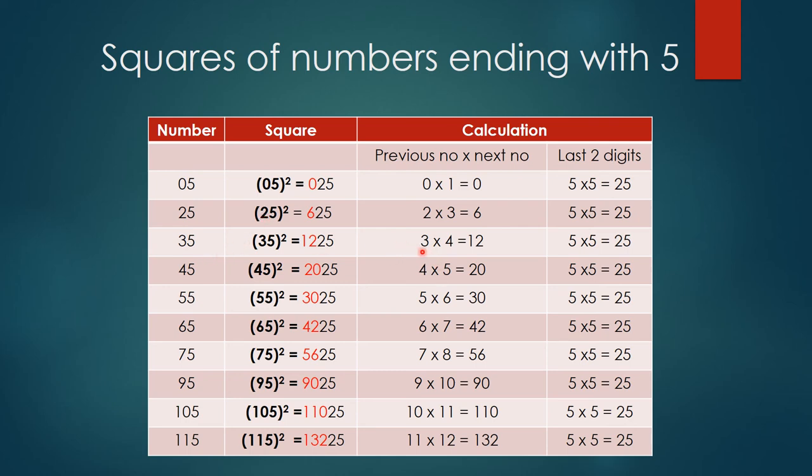4 times 5 is 20, so 2025. 5 times 6 is 30, 3025. 6 times 7 is 42, so 4225.